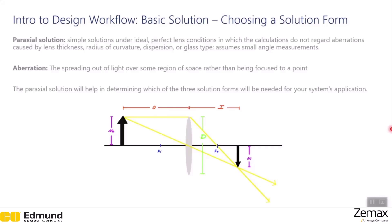Aberration is the spreading out of light over some region of space, rather than being focused to a point. A good example is if all the rays are not focused to a precise point but are instead scattered around it — you may see a blurry image. The paraxial solution will help in determining which of the three solution forms is needed for your system's application.